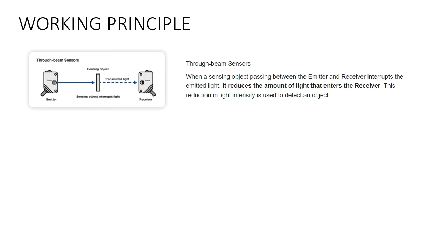In photoelectric sensors there are three different types. The first is the through beam sensor. The through beam sensor has an emitter and a receiver, with the sensing object in between. When the part is not present, the emitted light is received by the receiver. As soon as we introduce a part in between, this continuous beam of light gets interrupted, and thus we get a signal that the object is present.